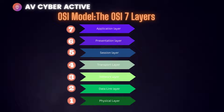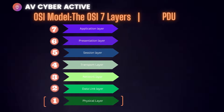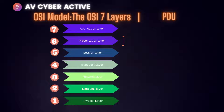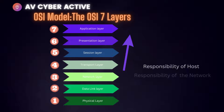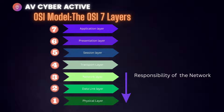Beginning with number one: physical layer; second, data link; third, network layer; fourth, transport layer; fifth, session layer; sixth, presentation layer; and the seventh, application layer. Keep in mind that layers seven through four are the responsibility of the host or computer itself, and layers one through three are the responsibility of the network or network devices.